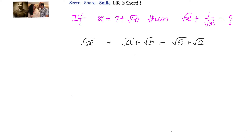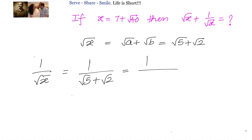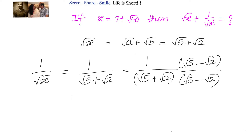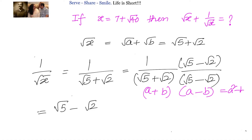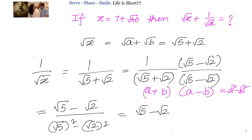Now, what we need to find is 1 by root x, which we can find by rationalization of the denominator. So 1 by root x equals 1 by root 5 plus root 2. Multiplying numerator and denominator by root 5 minus root 2, the denominator becomes root 5 squared minus root 2 squared, which equals 5 minus 2 equals 3. So 1 by root x equals root 5 minus root 2 divided by 3.